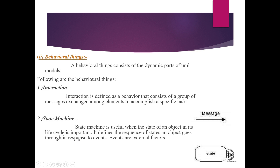State machine is useful when the state of an object in its lifecycle is important. It defines the sequence of states an object goes through in response to events. For example, a process can be in a bond state, run state, sleep state, waiting state, halt state, or trap state — the state is changing in response to external events.